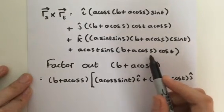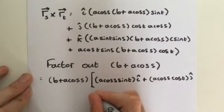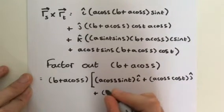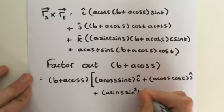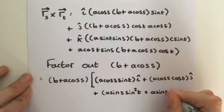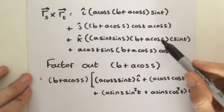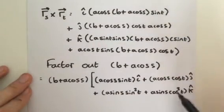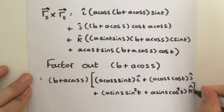Then we need to factor out b plus a cosine of s from our k term, which is these two lines here. So we get — still inside the brackets — plus a sine of s multiplied by sine squared of t, and to that we add a sine of s times cosine squared of t, and we multiply that by k. So we simply factor out b plus a cosine of s from these two terms: cosine of t times cosine of t gives cosine squared of t, and sine of t times sine of t gives sine squared of t.